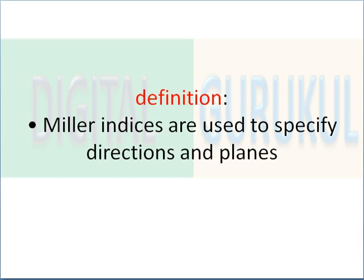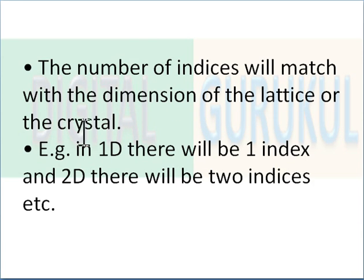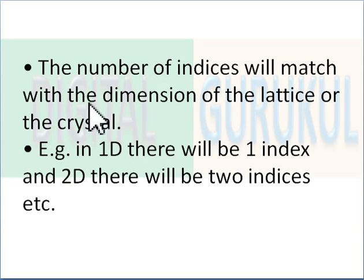Before starting Miller indices, let's first discuss the definition. Miller indices are used to specify the direction and planes — different lattice or crystal directions and planes. The number of indices will match with the dimension of the lattice or crystal. That is, in one dimensional there will be one index, and in two dimensional there will be two indices.